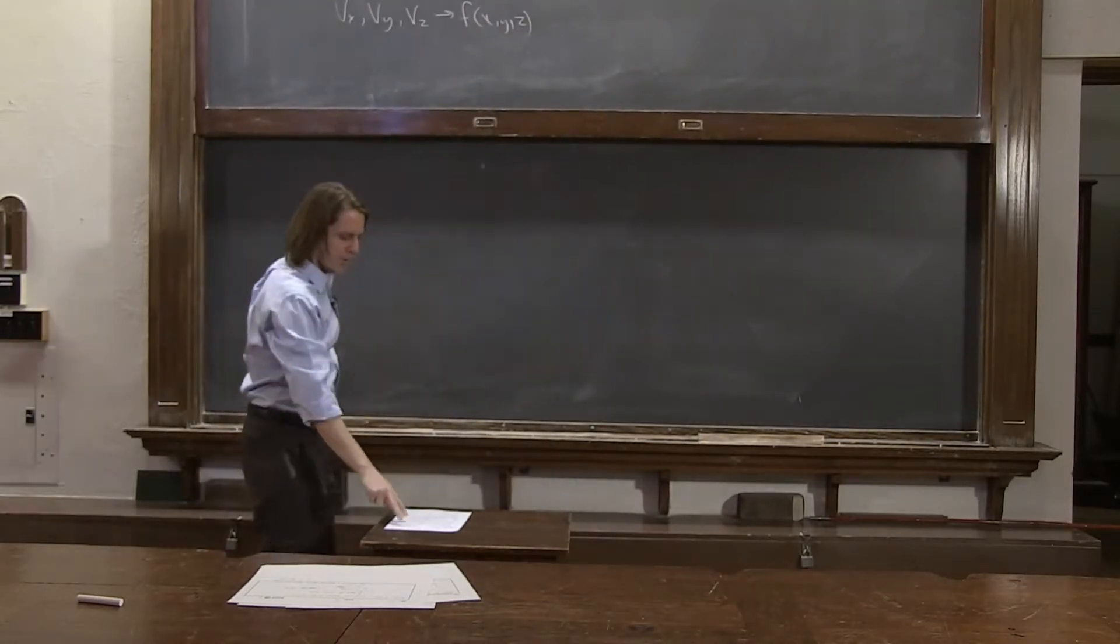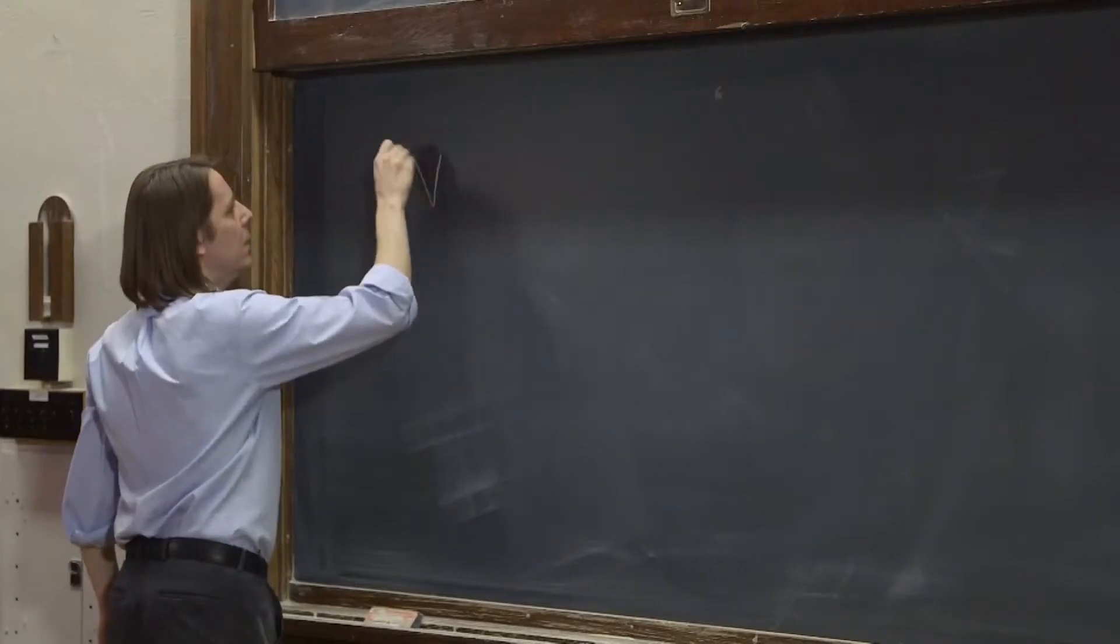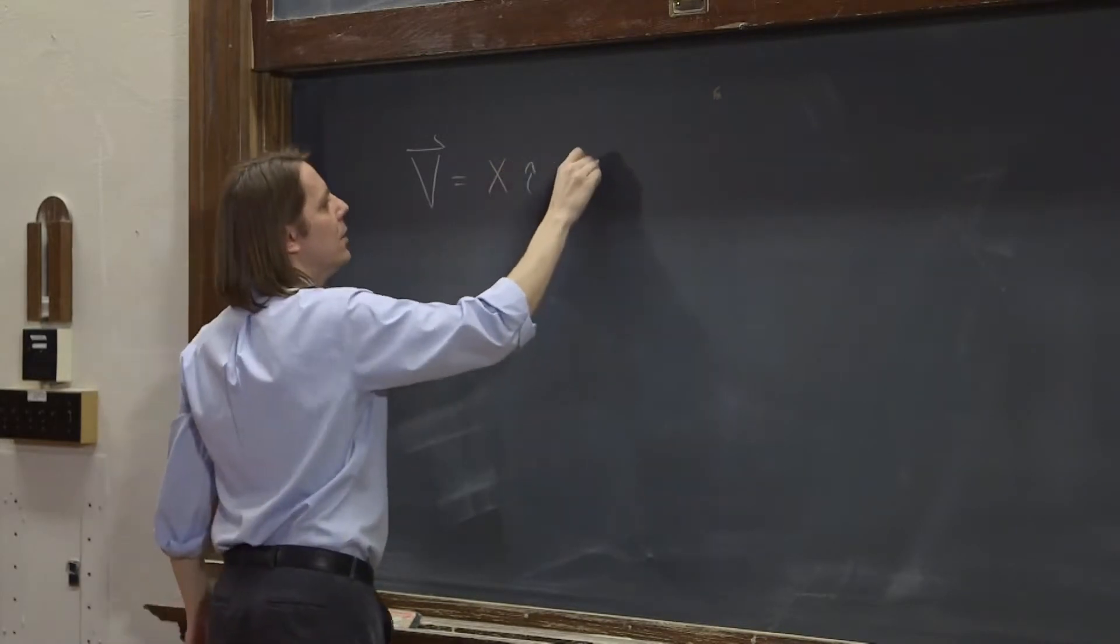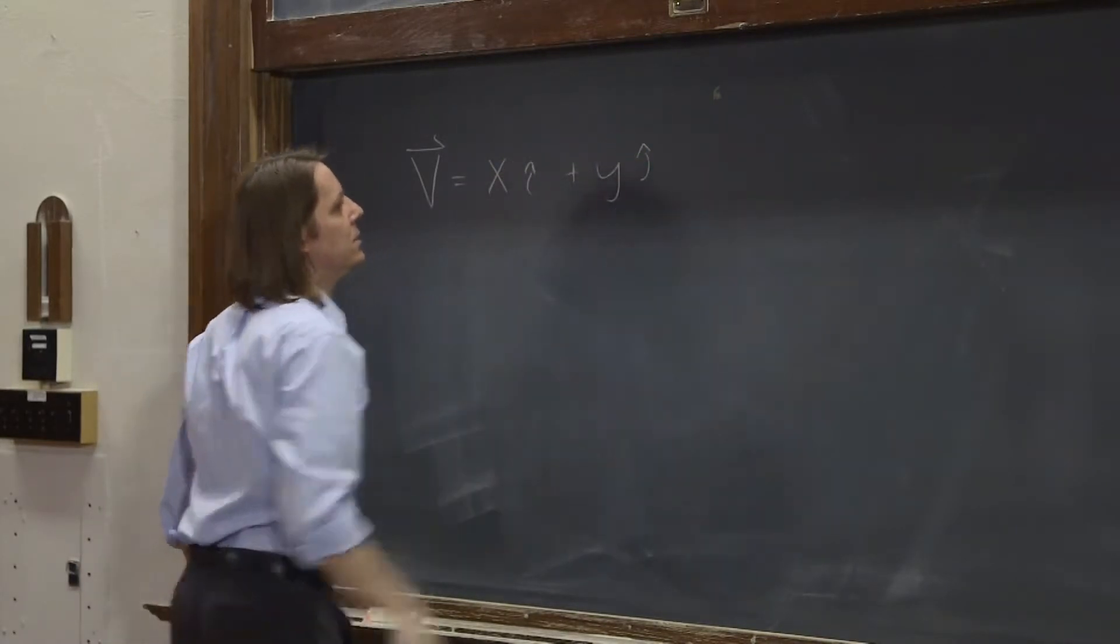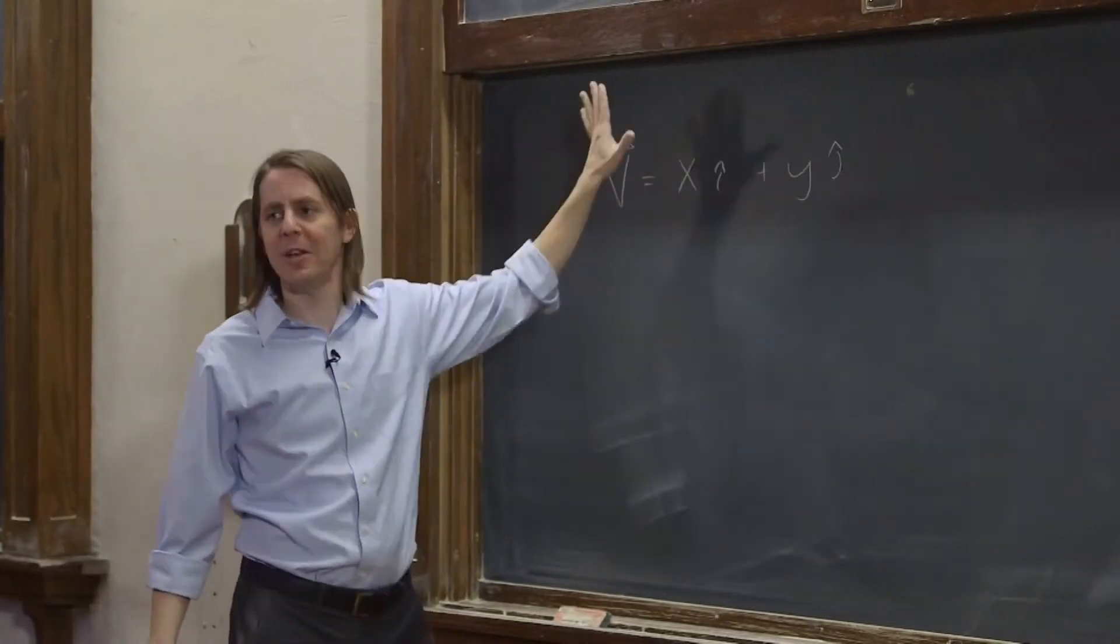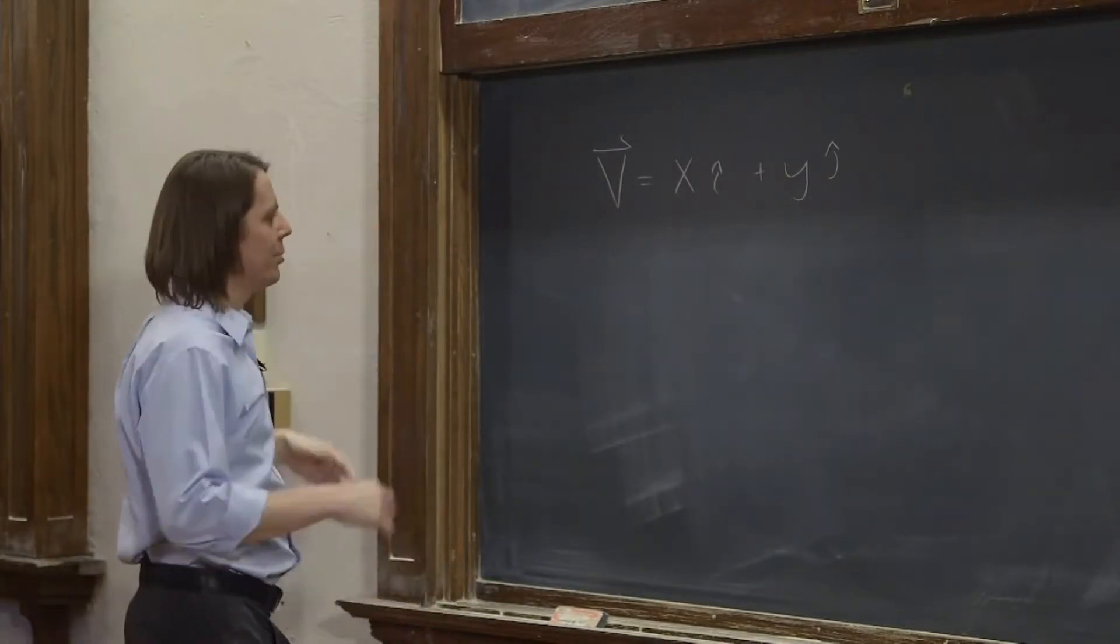Let's look at one and see why it's called divergence. Let's actually just make a field. V, let's call it x i-hat plus y j-hat. Now I said you could have a function of x, y, and z here, and you can. It can be very complicated, but I'm actually going to draw this, so I would rather not make it too complicated.